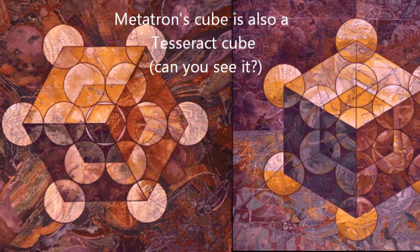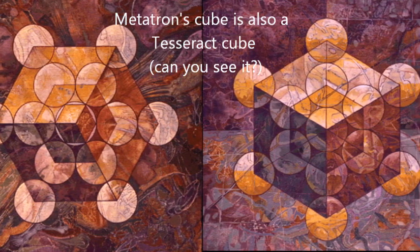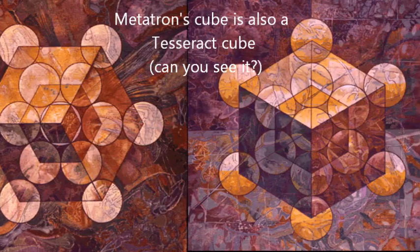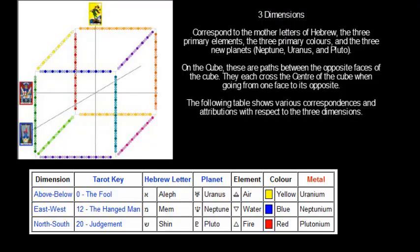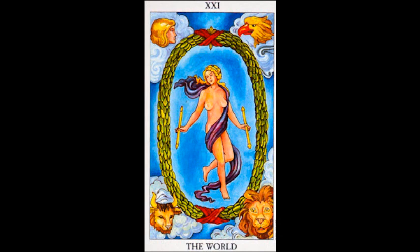In the middle of the cube there's actually a representation of the World card. The World card looks a little bit like this — by looking at its description, it's actually a female in the middle of a cube. That is basically the internal part of the cube. When you understand that, you understand that usually when people deal with the internal part of the cube, they consider it the Holy of Holies — the place that most people want to experience, which is basically hidden from the physical reality that we know.